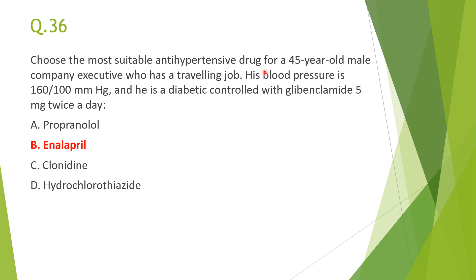Question 36: the most suitable antihypertensive drug for a 45-year-old diabetic male with grade 2 hypertension (160/100) controlled with glibenclamide is B, enalapril (ACE inhibitor). Propranolol, clonidine, and hydrochlorothiazide are not preferred in diabetic patients with hypertension. Enalapril is preferred because ACE inhibitors reduce the chances of diabetic nephropathy by reducing proteinuria or albuminuria.